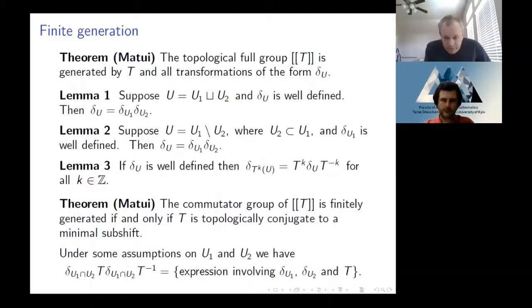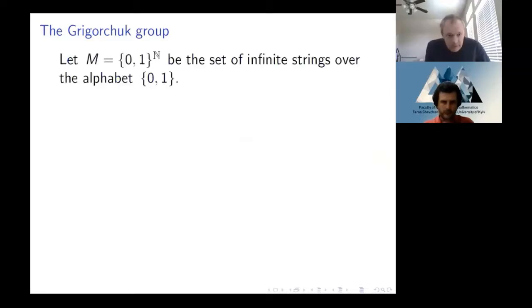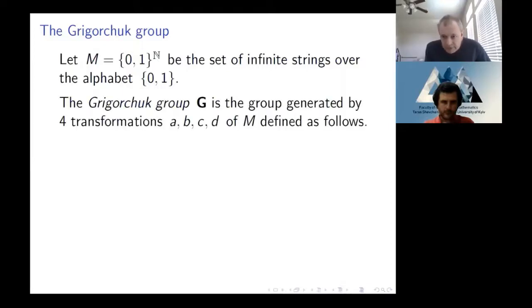Now with a few more minutes, let us discuss the relation between this topological full group and the Grigorchuk group. Let's define the Grigorchuk group properly as a transformation group. Consider the set of infinite strings over the alphabet {0,1} — one-sided strings. The Grigorchuk group acts on this set and is generated by four transformations A, B, C, D.